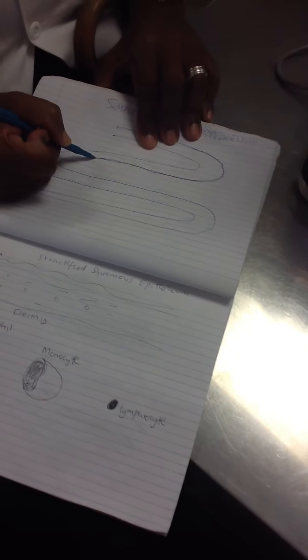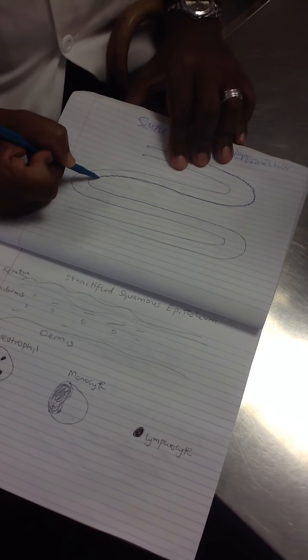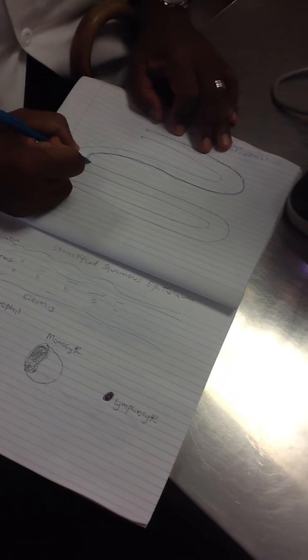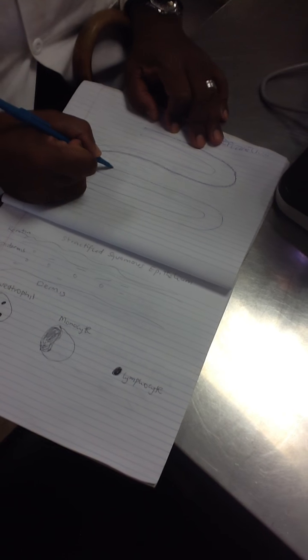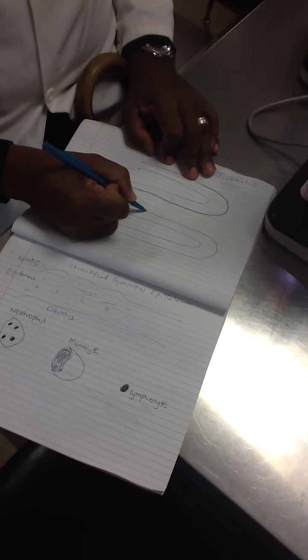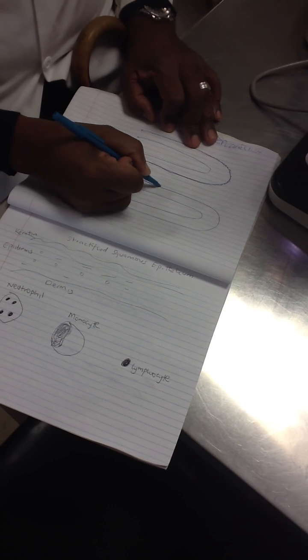And we call the microvilli in the G.I. tract brush border, right? What's the supplement of application? Oh, my God. Sorry, guys. That was in September.